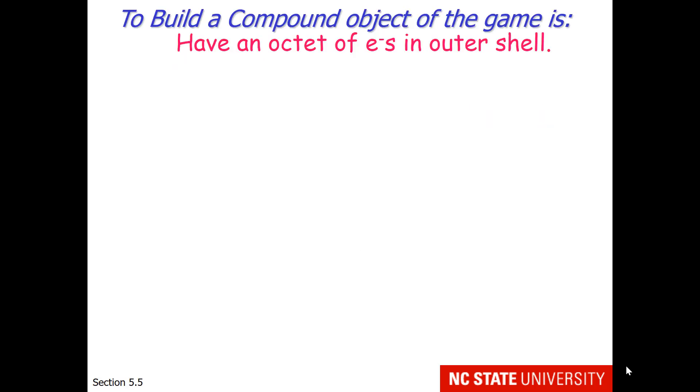When building a compound, either ionic or molecular, there's one objective: to have an octet of electrons in the outer shell.